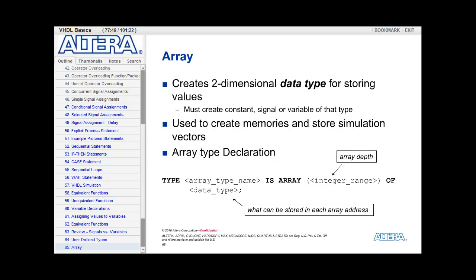We use arrays to create memories and also to store simulation vectors. So here is what the array type declaration looks like. You use the keyword type followed by the array type name. Again, this is the data type name. Is array, those are both keywords, followed by an integer range which specifies the depth of your array. After that is the keyword of and then the data type. Basically, what type or what information can be stored in each address of your array.